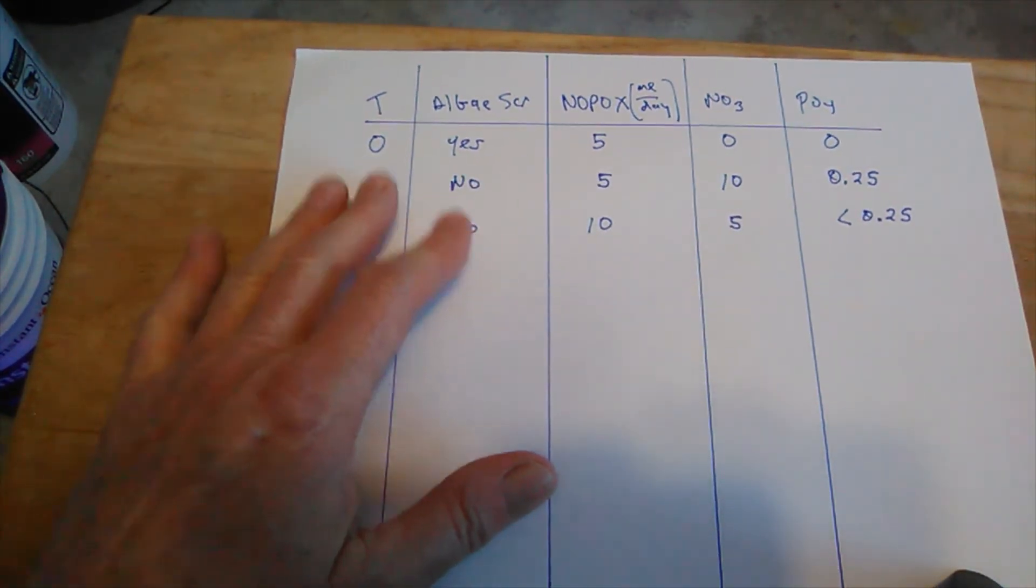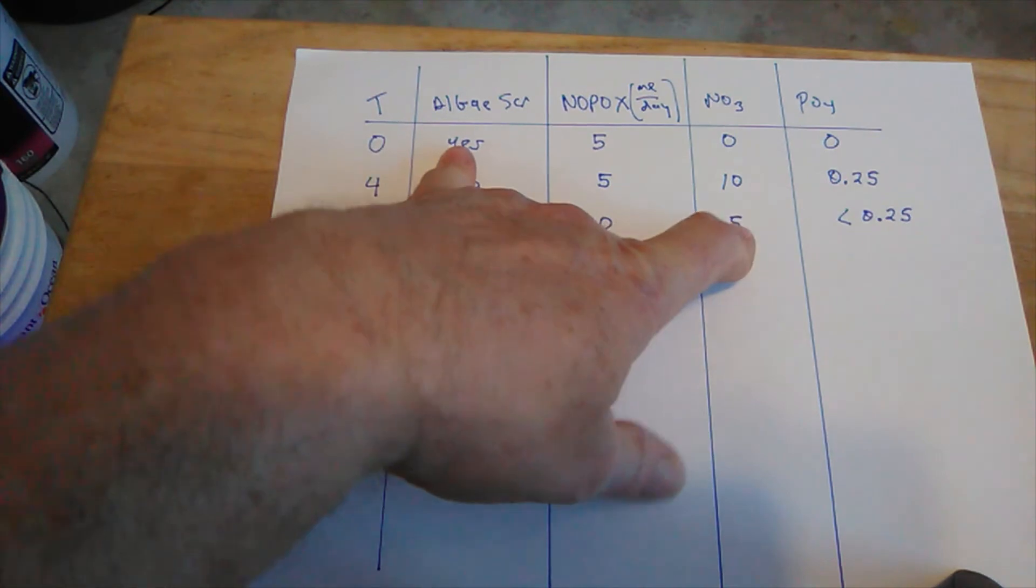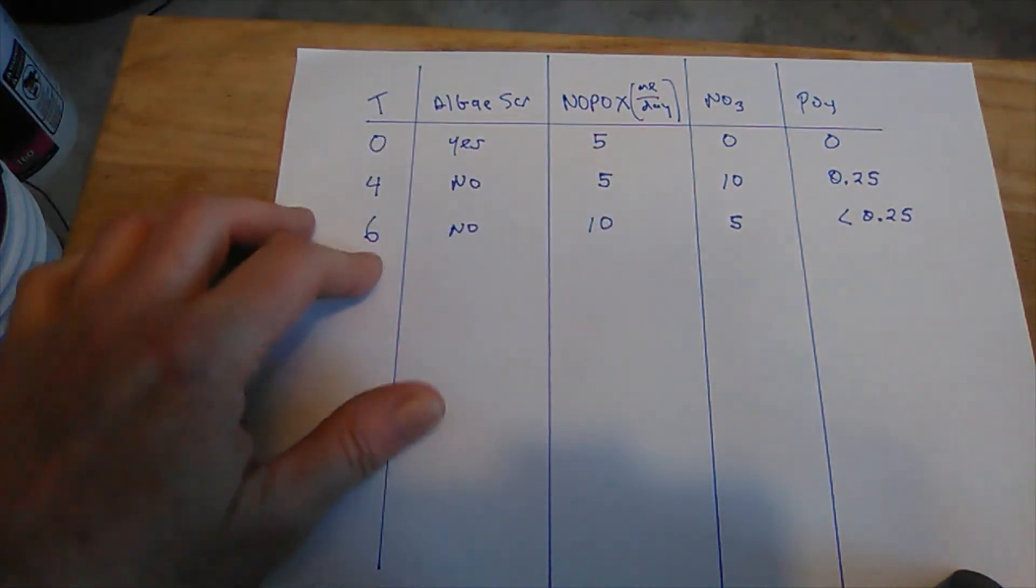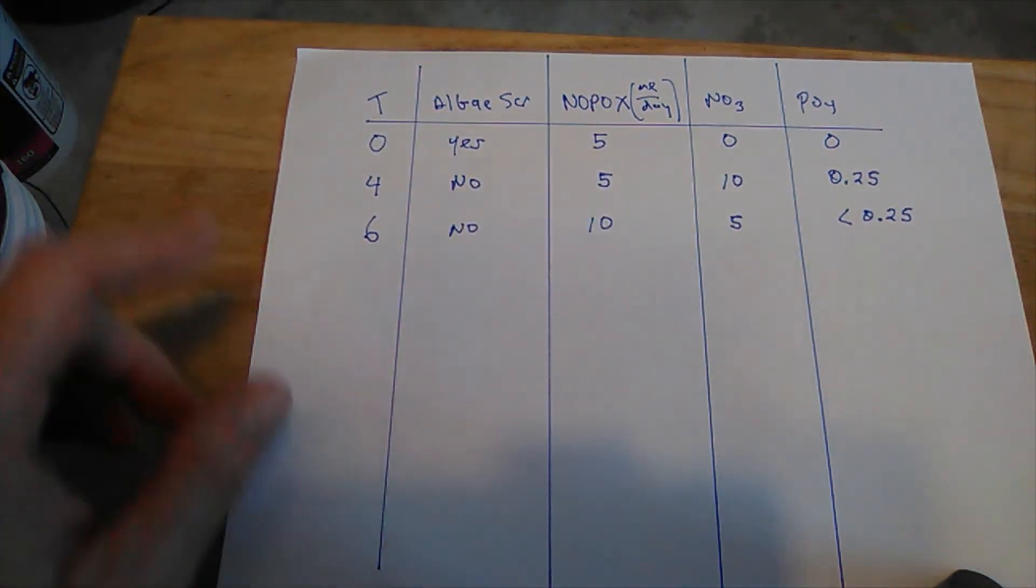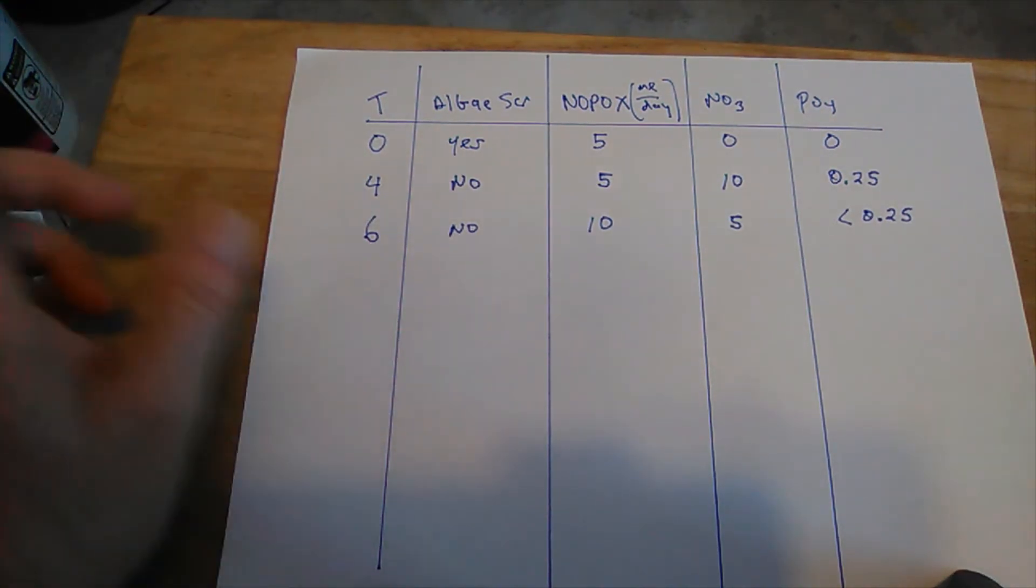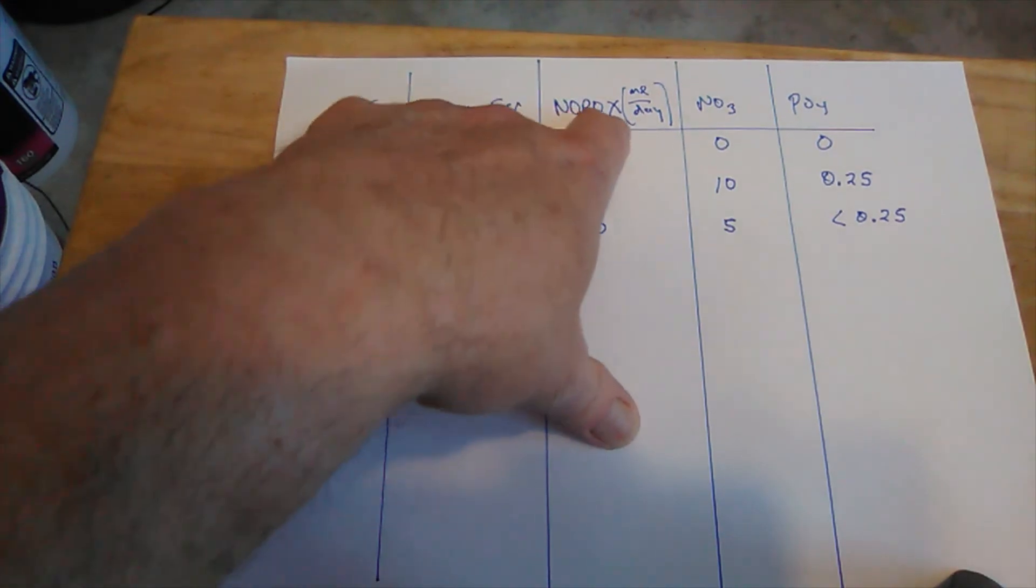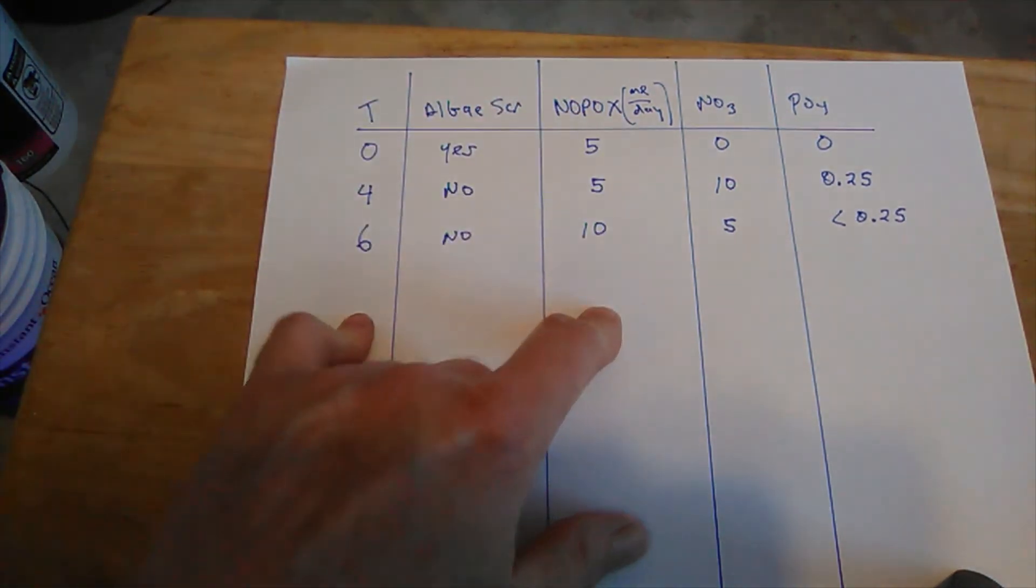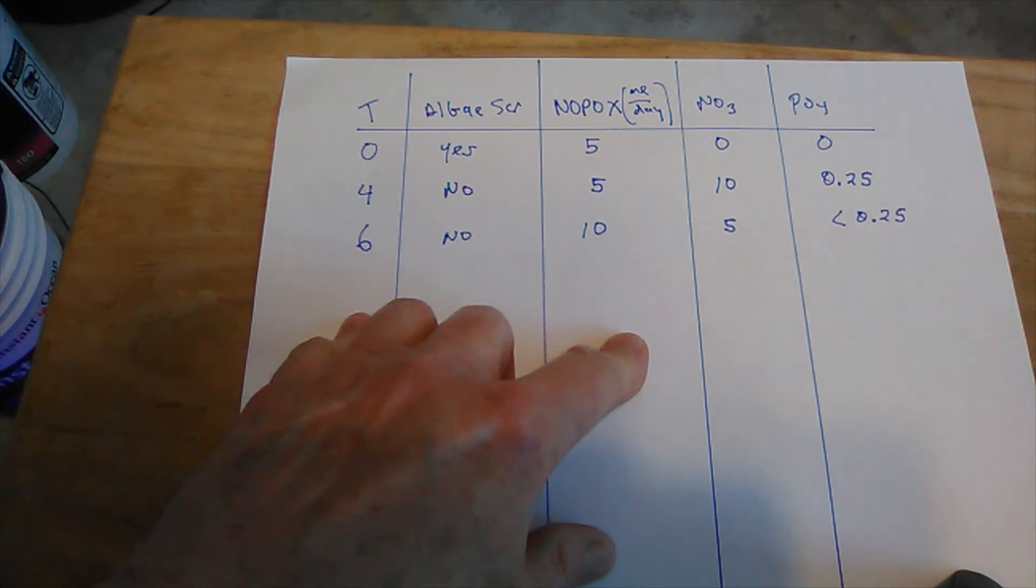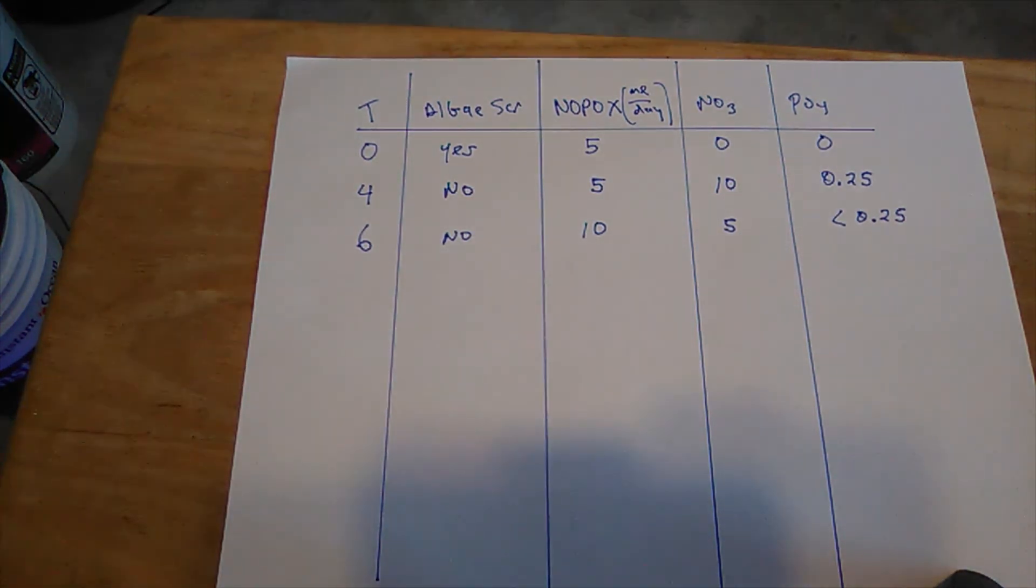So the NOPOX is working. Now, will it take it without the algae scrubber all the way back to zero? Well, I'm going to continue this experiment, but I won't bore you with the rest of it. I'm going to continue dosing at 10 milliliters per day, because I make this stuff myself, so the cost is not that bad. And I'll continue doing this and see what results I can get. I thought that was interesting. I'll see you later.